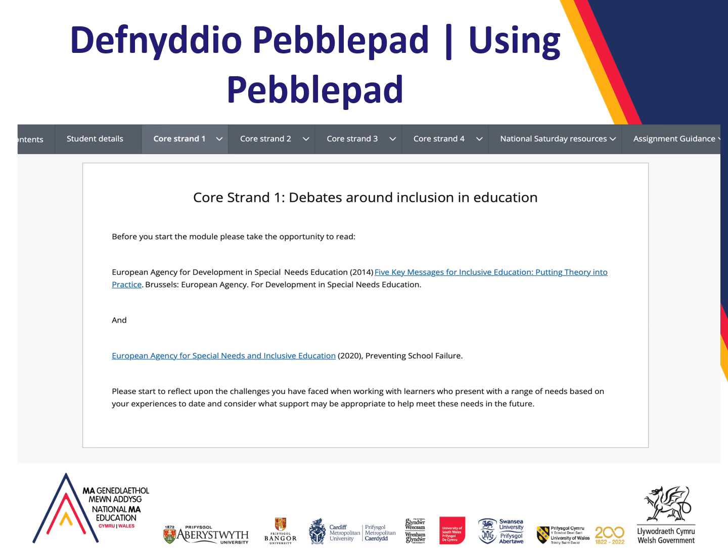Course strand one, for example, will look at debates around inclusion and education, and when you click on that you will see a range of sub-strands open up. Looking at the toolbar at the top of the screen, you will also see headers such as National Saturday resources — which I'll talk about briefly later — relating to our National Conference Saturday sessions, and information relating to assignment guidance. As a recap: Canvas is the Swansea-specific environment accessed with your Swansea University email and password, while Pebblepad is the shared material accessed via your Education Workforce Council account, seen by all students across the seven universities involved.